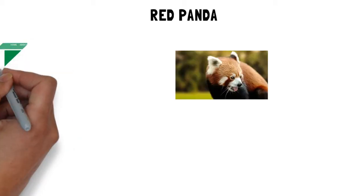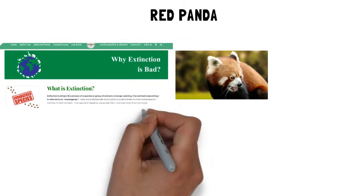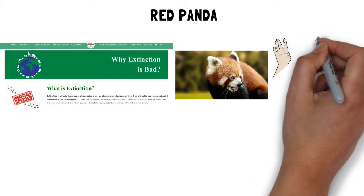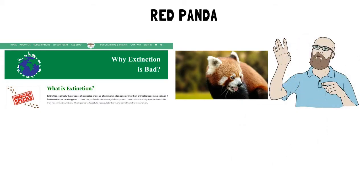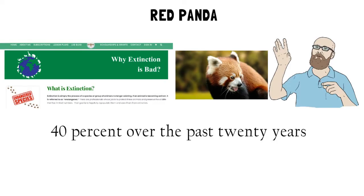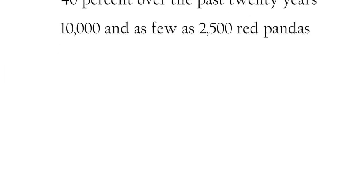Red panda. Red pandas are endangered. They are legally protected in India, Bhutan, China, Nepal, and Myanmar. Researchers think the total number of red pandas went down by 40% over the past 20 years. Overall, there are as many as 10,000 and as few as 2,500 red pandas still in the wild.